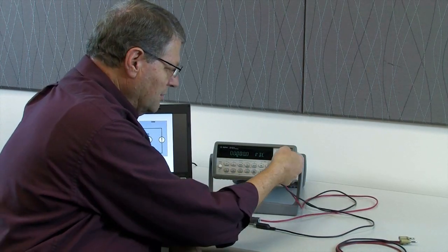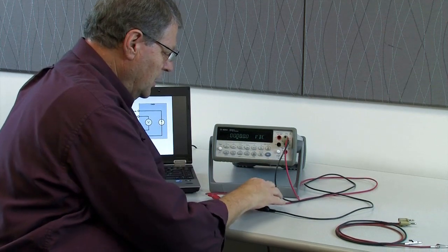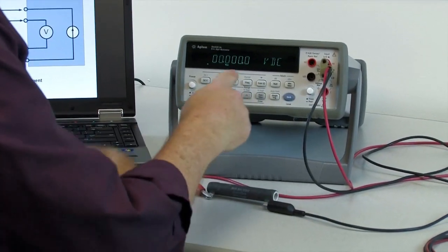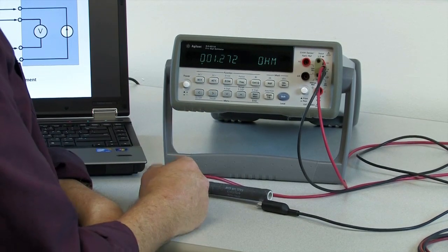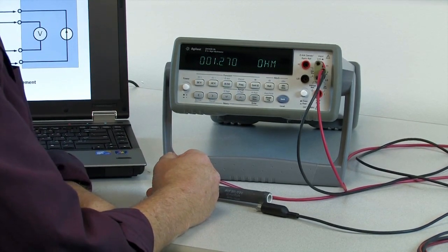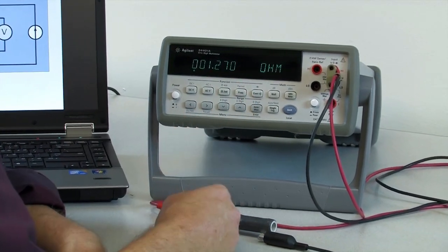I've got my two wires connected and I'm measuring across this unknown resistor. So let me go ahead and select two wire ohms and it says it's 1.27 and a little bit for resistance, 1.27 ohms.